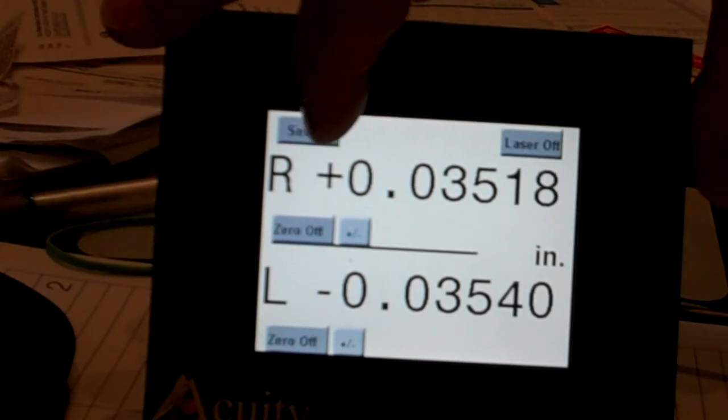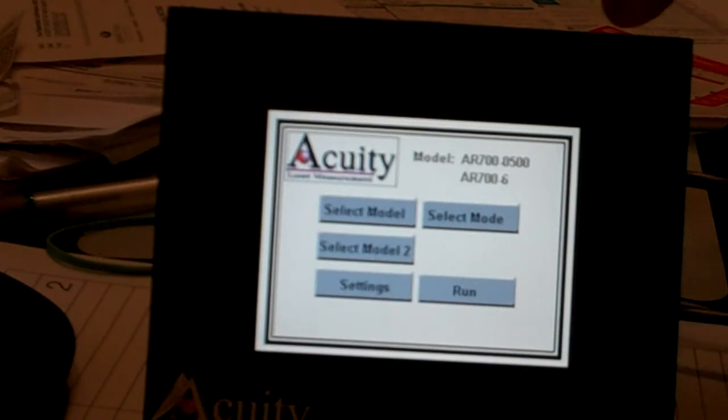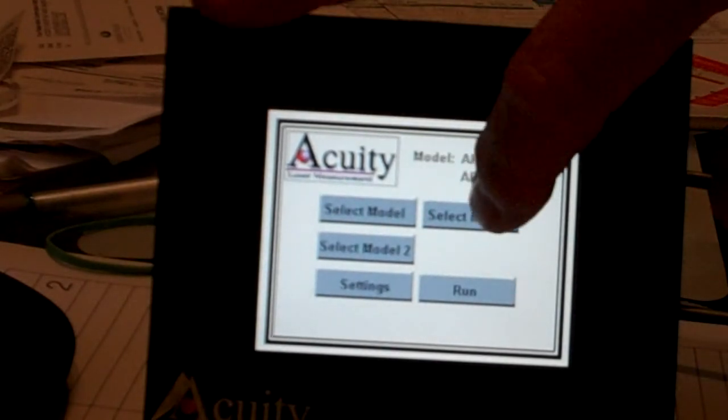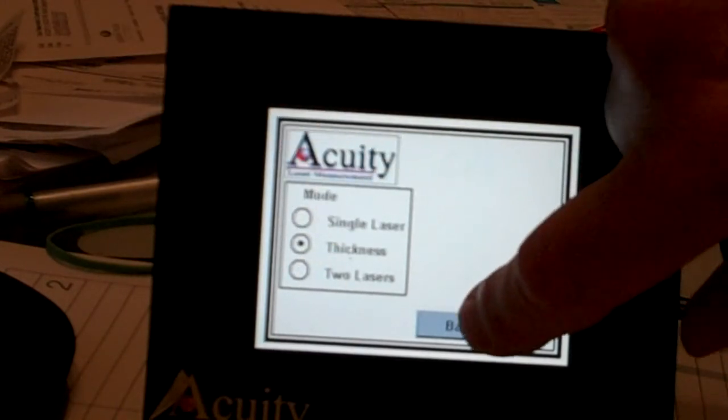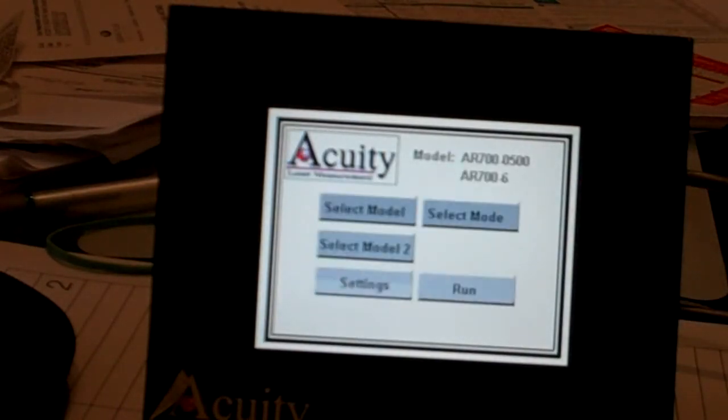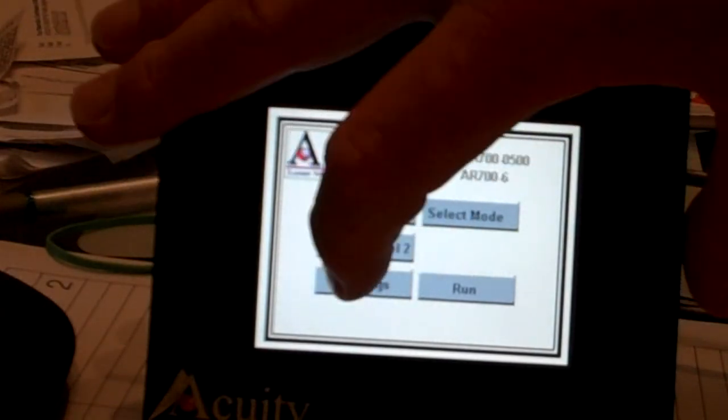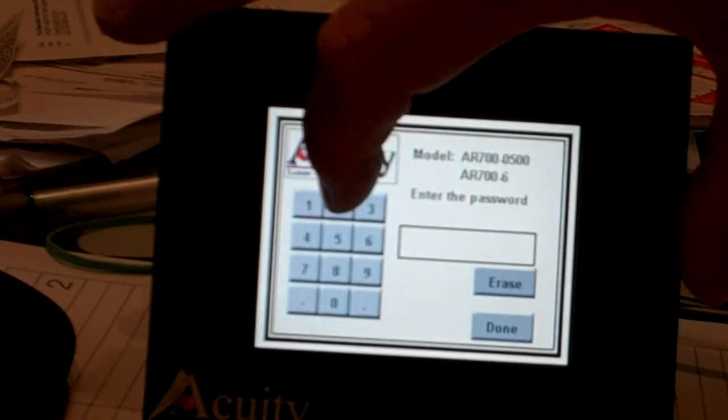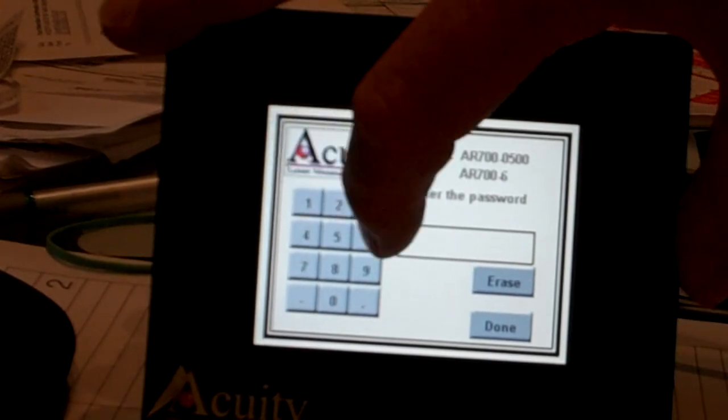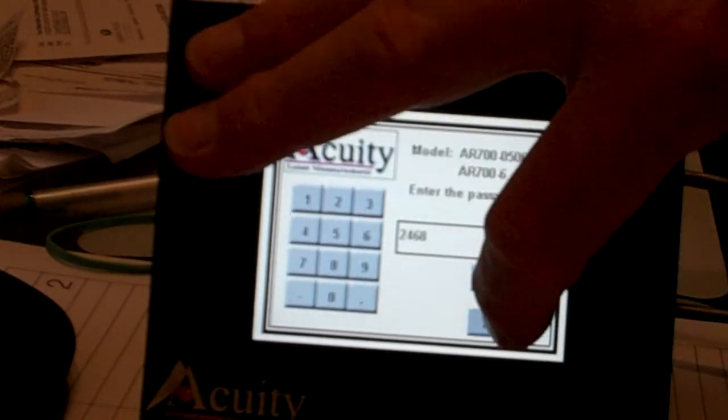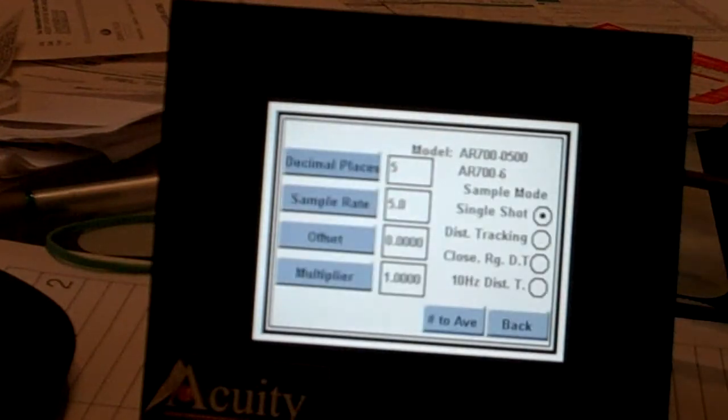Now what I'd recommend is to go back into setup. Change the mode now. Now that you know it's working correctly. Let's go into thickness. Let's go into settings. Passcode 2468. And go into rate and cal.